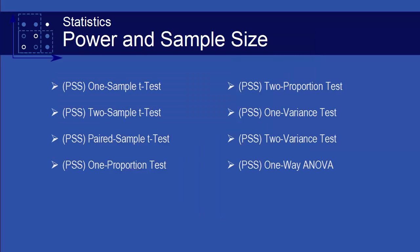Origin Pro offers several power and sample size tests. These can be used to determine whether an experiment is likely to yield useful information with a given sample size, or determine the minimum sample size needed to produce a statistically significant experiment.